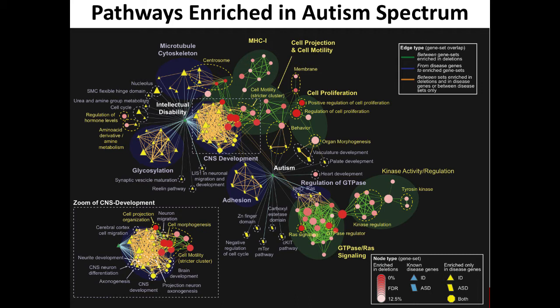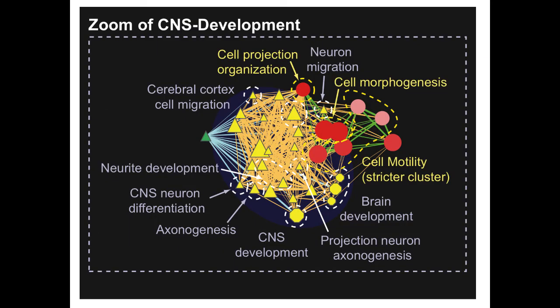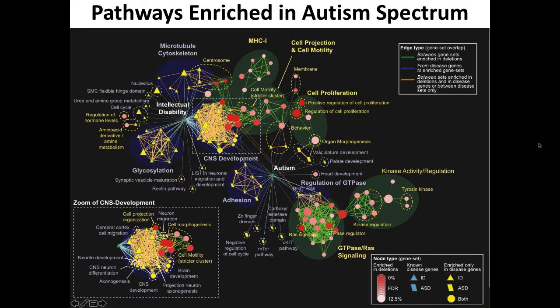Other symbols on the plot represent pathways enriched in known intellectual disability genes and known autism genes. There was overlap between pathways, even though the specific genes known to be involved in intellectual disability and autism were not seen mutated repeatedly — the pathways they affected and the pathways affected by the new copy number variants that were mapped were very similar. This helped validate the results.